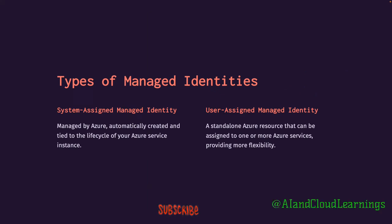There are two types of managed identities: system-assigned and user-assigned. The system-assigned managed identity is fully managed by Azure — it is automatically created and tied to the lifecycle of your Azure service instance. For example, when you create a VM and enable managed identity on it, Azure creates a managed identity for that VM, and when you delete the VM, that managed identity also gets deleted.